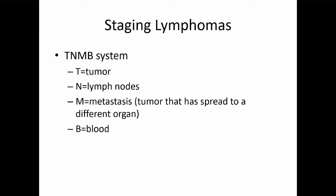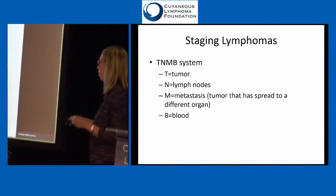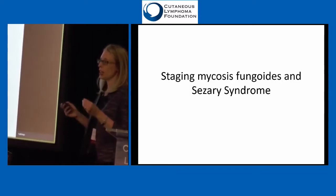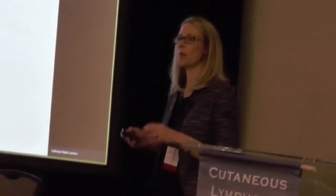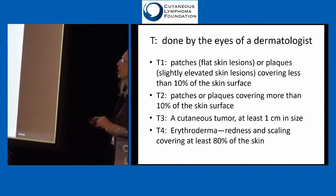For all cancers, lymphomas and others, there's usually this TNMB system, or TNM for things that don't involve the blood. T means the tumor, N means the lymph nodes, M means metastasis — when the cancer has spread to a different organ than where it started — and B is for blood, which applies to cutaneous lymphomas. I'm going to talk specifically about mycosis fungoides and Sezary syndrome now. I apologize if you have a different type of lymphoma — this isn't going to pertain to you as much. I will touch on the other staging systems at the end.